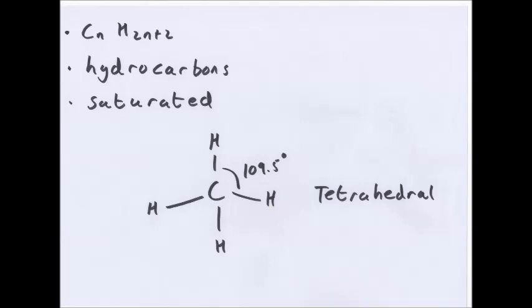Alkanes have the general formula CnH2n+2. So if you have an alkane with 5 carbons, C5, it's H12. They're hydrocarbons, they contain hydrogen and carbon only, and they are saturated. There are no carbon-carbon double bonds. Also they're always tetrahedral. That means they have a 109.5 degree bond angle.